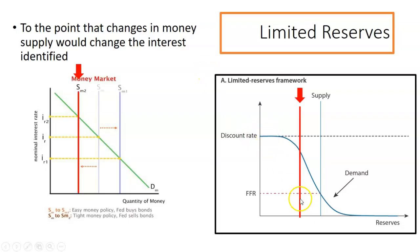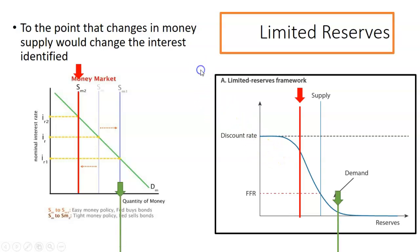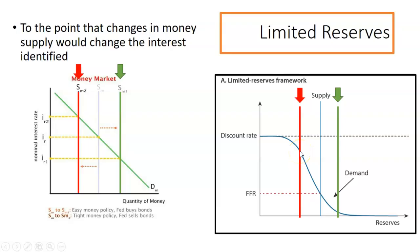On the reserve graph, the interest rate we're predominantly trying to figure out is the federal funds rate — what interest would a commercial bank lend money to another commercial bank? Based on limited reserves, it's at the intersection of the supply and the demand. So decreasing supply increases that intersection point, which would increase the federal funds rate. Increasing supply of money would decrease the interest rates. If a bank has to borrow at a higher interest rate from another commercial bank, it's probably going to charge its customers a higher interest rate as well, so this can indirectly influence how banks work with their customer base.